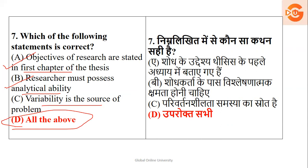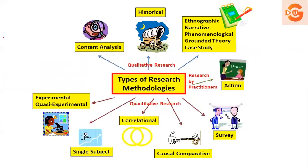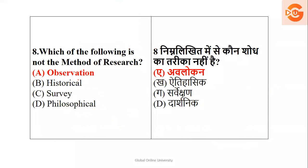Question 8: Which of the following is not a method of research? We have studied many methods: qualitative research, quantitative research, content analysis, quasi-experimental, correlational research, survey research, observational, historical, and philosophical. Looking at the options — observational, historical, survey, philosophical — the odd one out here is observation. So option A is the wrong answer, meaning observation is not listed as a standard research method in this context.